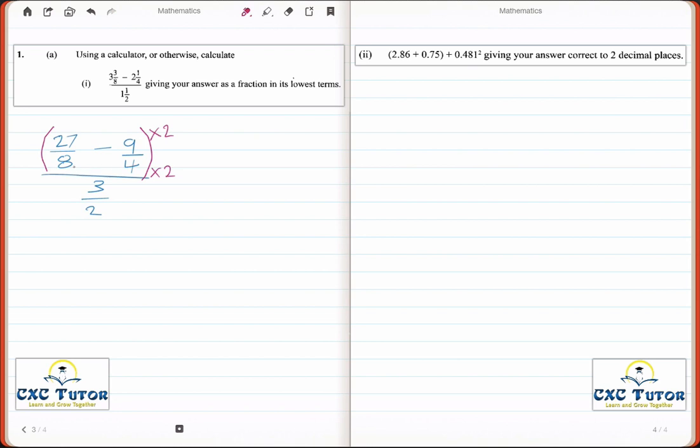So both of my denominators are 8. That would give me now the expression 27 minus 18 over 8, all divided by 3 over 2.